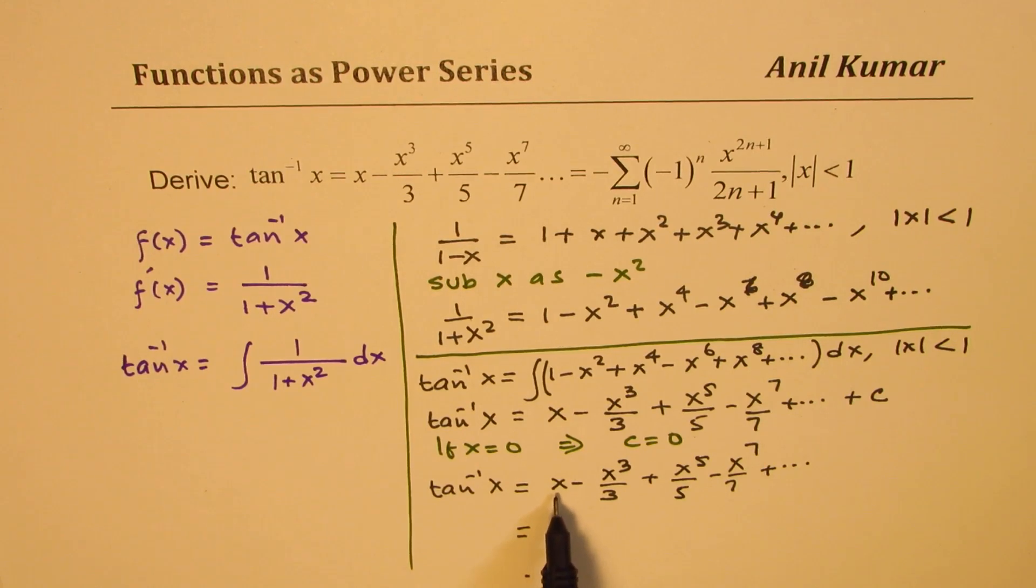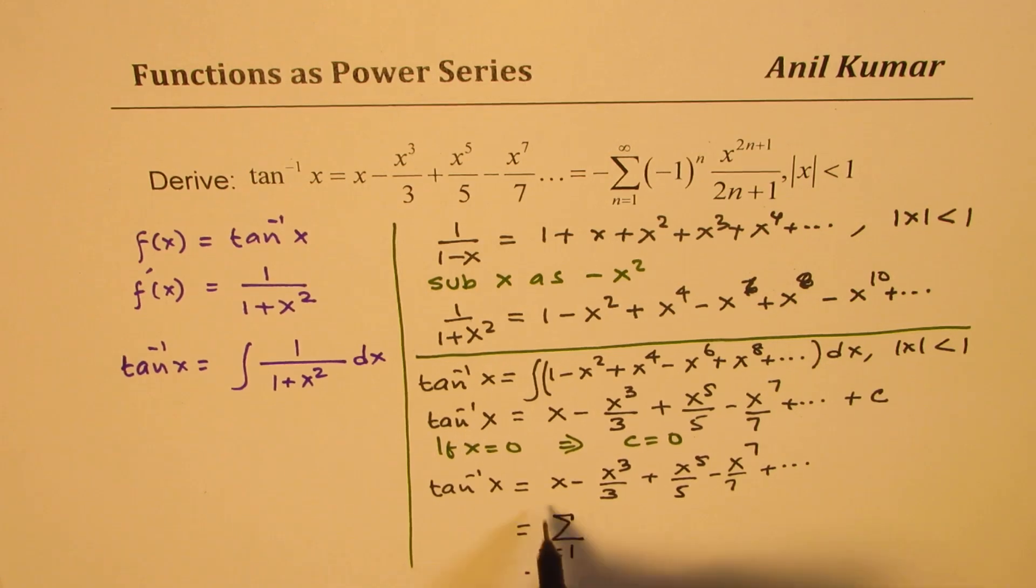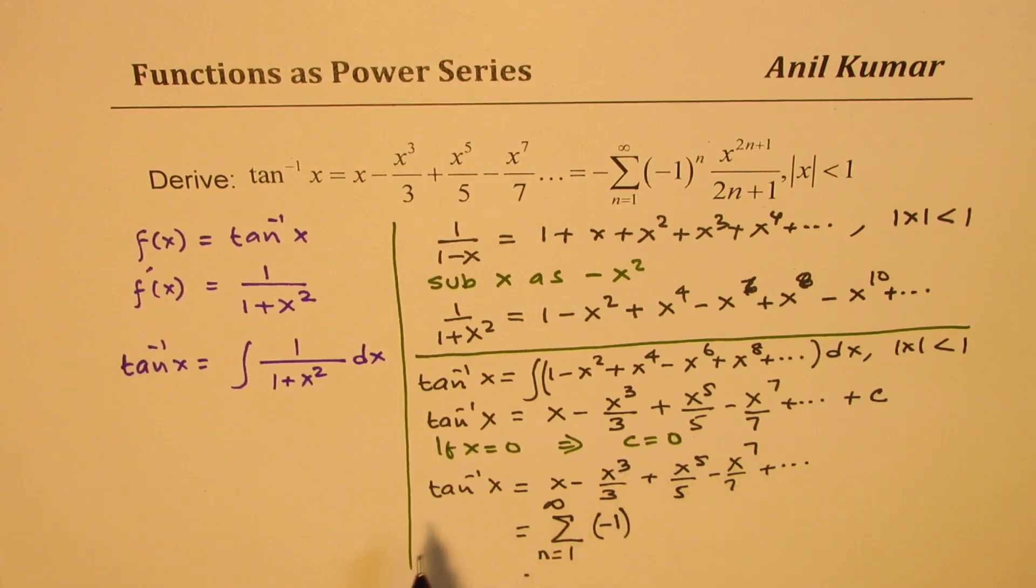Now in summation form, as you can see here, the first one is positive. So the sign will be from n equals to one to infinity, x to the power of n, and the first one is positive so we have minus one to the power of n.